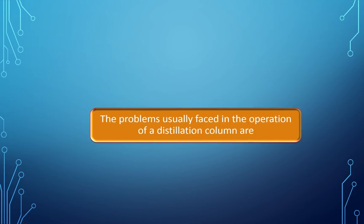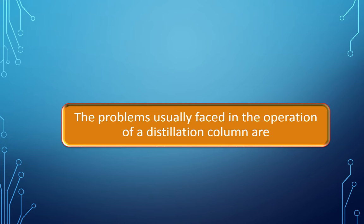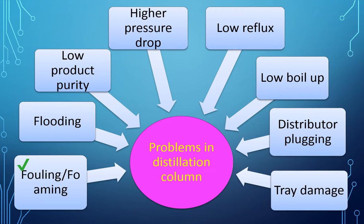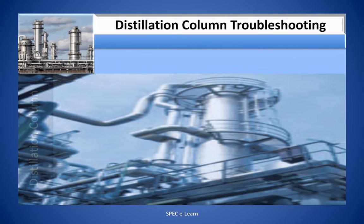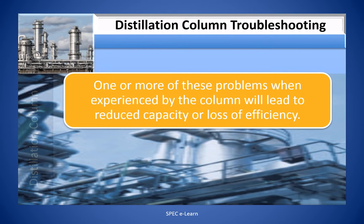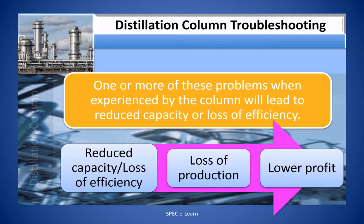The problems usually faced in the operation of a distillation column are: fouling or foaming, flooding, low product purity, higher pressure drop, low reflux, low boil-up, distributor plugging, and tray damage. One or more of these problems, when experienced by the column, will lead to reduced capacity or loss of efficiency, which leads to loss of production and lower profit.